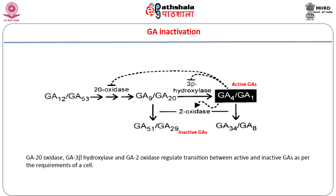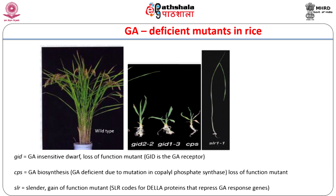Enzymes in the gibberellin biosynthesis pathway were identified by isolation of dwarf mutants that arose due to GA deficiency. For example, the mutant CPS showed a defect in the enzyme copalyl diphosphate synthase. This mutant could be restored to wild type by exogenous application of gibberellin. However, some of the dwarf mutants could not be restored to wild type plants by exogenous application of gibberellins, and arose due to defects in the gibberellin signaling pathway.